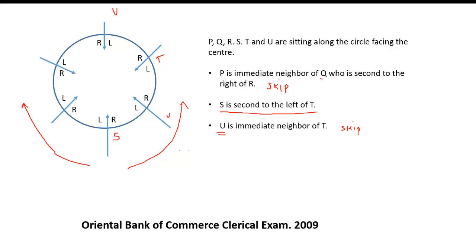P is an immediate neighbor of Q, but Q is second to the right of R. If you take this position as Q, then R will be — since Q is second to the right of R — going one and two to the right hand side brings us to Q.